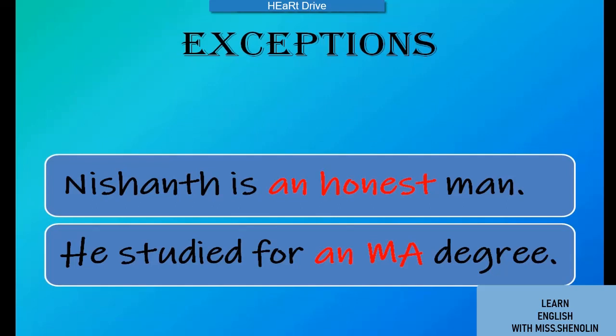So we say 'an honest man.' Similarly, 'He studied for an MA degree.' We use 'an' before 'MA' because the letter 'M' is pronounced 'em,' which gives a vowel sound. So we use 'an' before 'MA.'